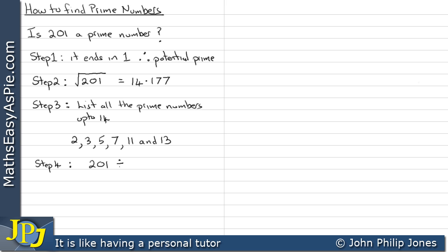Step 4. Divide 201 by the first prime which is 2 gives us a fraction answer. Divide by 3 gives us 67. This goes exactly i.e. no remainder. No fraction in the result. Therefore 201 is not a prime number. 201 is not prime.